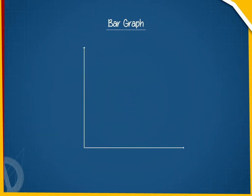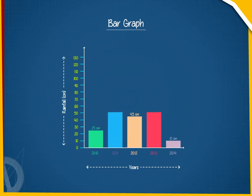See this bar graph which shows the amount of rainfall in the city in the last 5 years. Here, the horizontal axis has bars of different years and the vertical axis shows the rainfall in centimetres. One unit length represents 10 centimetre rainfall.